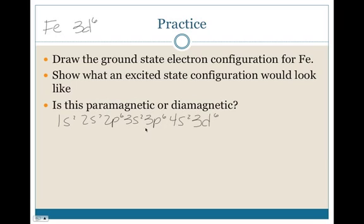An excited state configuration would look like one of these s electrons would jump up here. So instead of 4s2, 3d6, it would be 4s1, 3d7. And then is this paramagnetic or diamagnetic? To figure that out, you have to draw the orbital notation for this last sublevel to be filled.